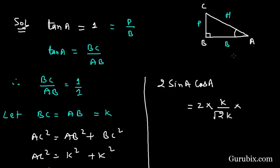Cos A is base over hypotenuse, which is K over square root of 2K. So here we have 2K square over 2K square which is equal to 1.